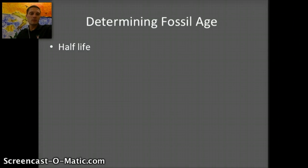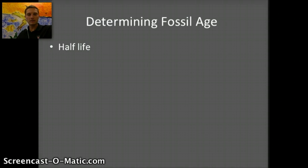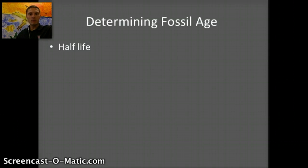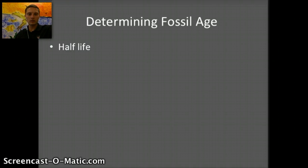Before we get into human evolution, we want to talk about what a half-life is and basically how we can determine the age of something. A half-life refers to a radioactive element that is present, and once something dies, those elements decay to something called a daughter isotope. That process of decay occurs at a fixed rate, and how long it takes for half of the sample to decay is called a half-life.